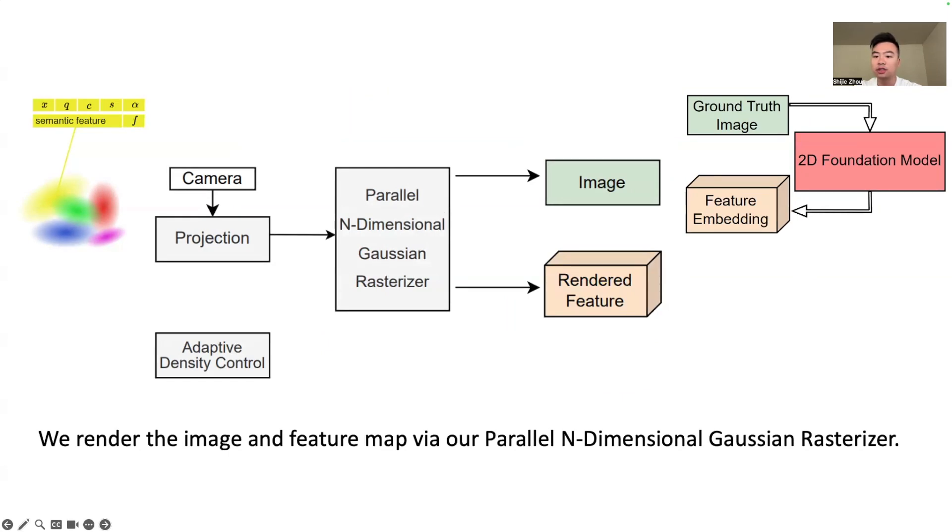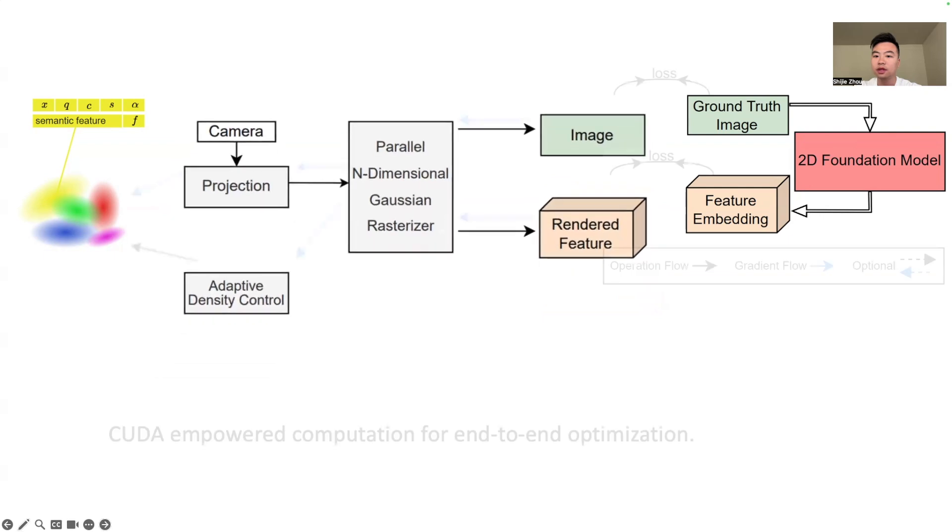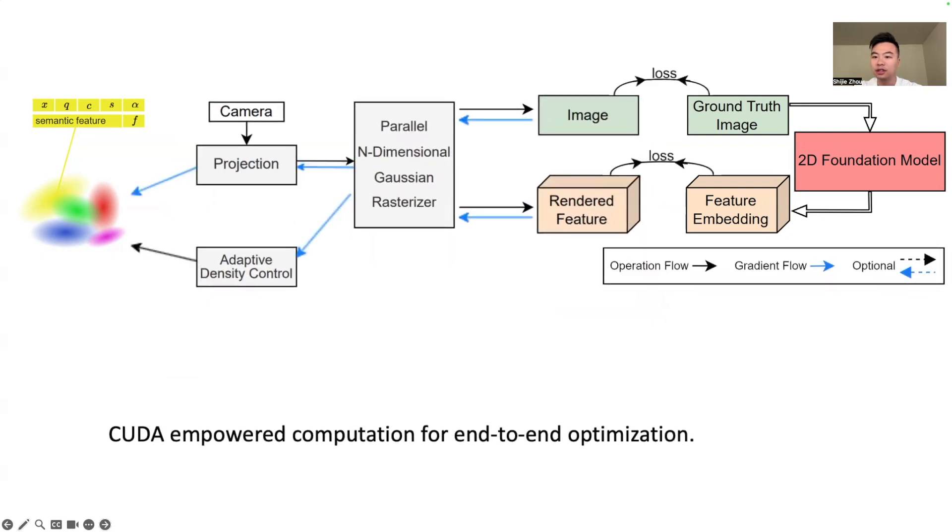Our first key contribution is the parallel n-dimensional Gaussian rasterizer, which can render high-resolution feature maps with arbitrary feature dimension without any effect to the RGB rendering. And everything is optimized end-to-end.